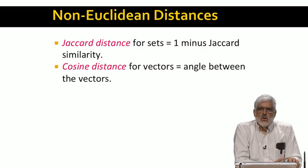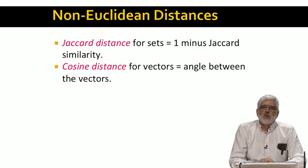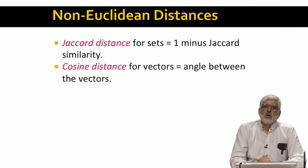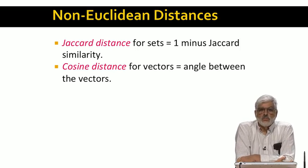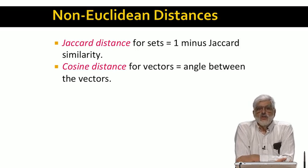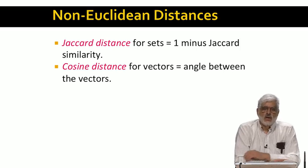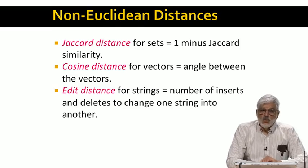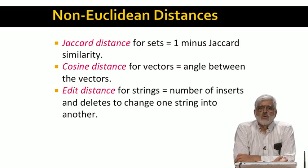The cosine distance requires points to be vectors. If the vectors have real numbers as components, then they are essentially points in a Euclidean space, but they could have integer components, in which case the space is not Euclidean. Either way, the cosine distance is the angle between the vectors — it's called the cosine distance because it is generally easiest to compute the cosine of the angle between the vectors, and then use the cosine to figure out the actual angle. The edit distance applies to points that are character strings, and is the minimum number of inserts and deletes needed to transform one string into the other.